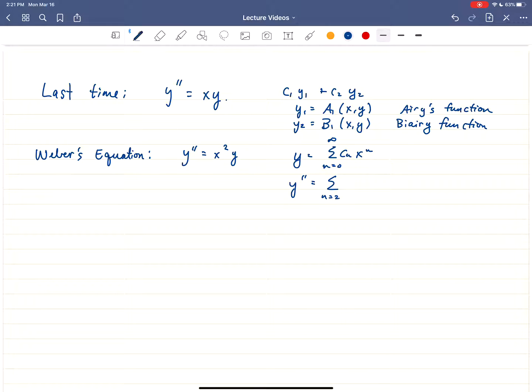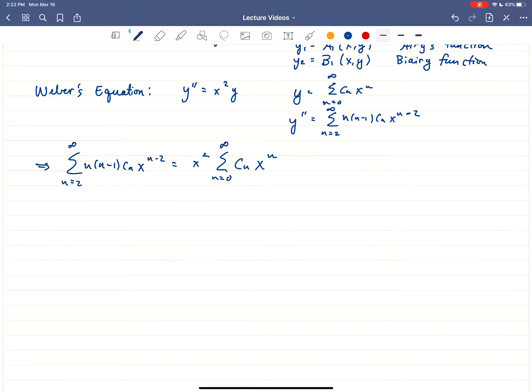So we're going to let y be the sum c sub n x to the n as n goes from 0 to infinity. y prime and y double prime are the same. Since we've seen this story, I'm just going to cut to y double prime. So it's going to be the sum from n equals 2 to infinity, n times n minus 1, c sub n, x to the n minus 2. We're just differentiating inside. We're just going to differentiate the sum twice. So that's y double prime. Plugging everything back in, we're going to get that the sum from n equals 2 to infinity, n times n minus 1, c sub n, x to the n minus 2, is equal to x squared times the sum corresponding to y. So the sum from n equals 0 to infinity, c sub n, x to the n. And then let the manipulations begin.